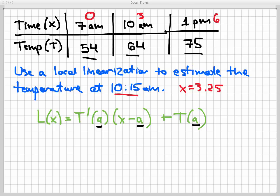Should I let a equal 0? Should I let a equal 3? Should I let a equal 6? Well, that's kind of a function of where I want the estimate. I'm going to use the local linearization to estimate the temperature at x equals 3.25. So for my a, I'm going to want to choose the closest value to 3.25, where I actually know the function value. So that would be time equals 3 in this case.